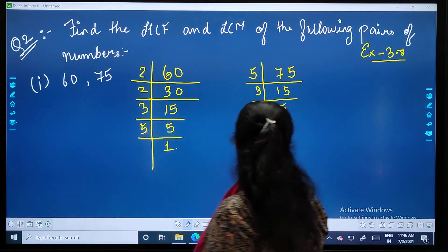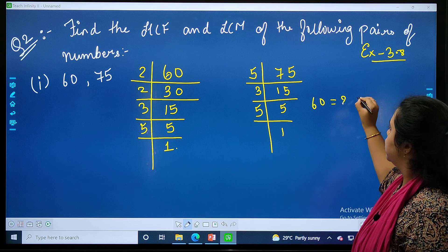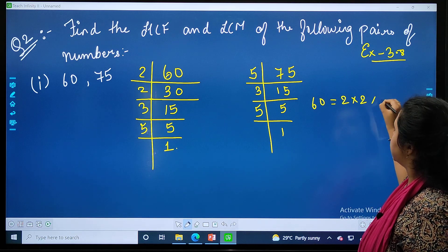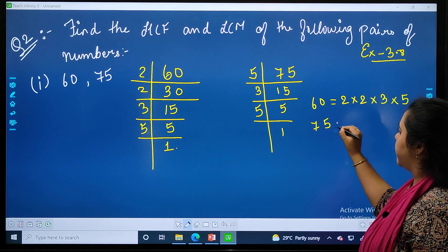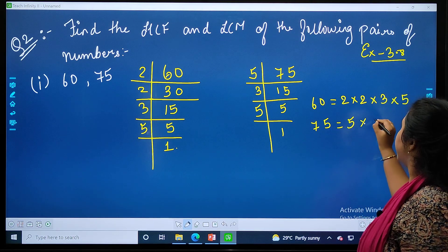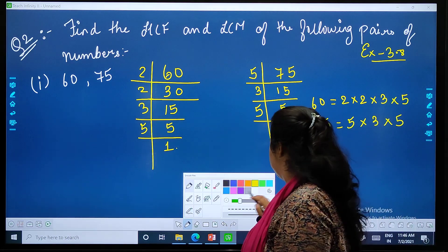So the factors of 60 equals 2 into 2 into 3 into 5, and 75 equals 3 into 5 into 5. Done.